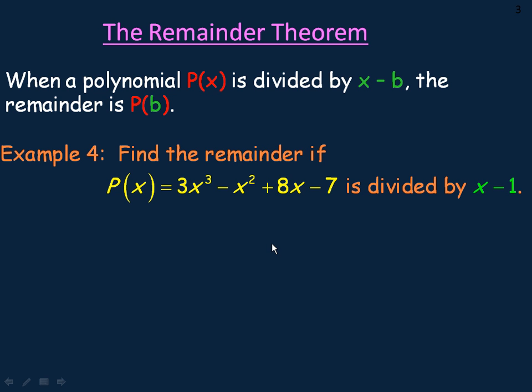Now here's the second part of the lesson, the remainder theorem. The remainder theorem says when a polynomial P(x) is divided by x minus b, the remainder is P(b).